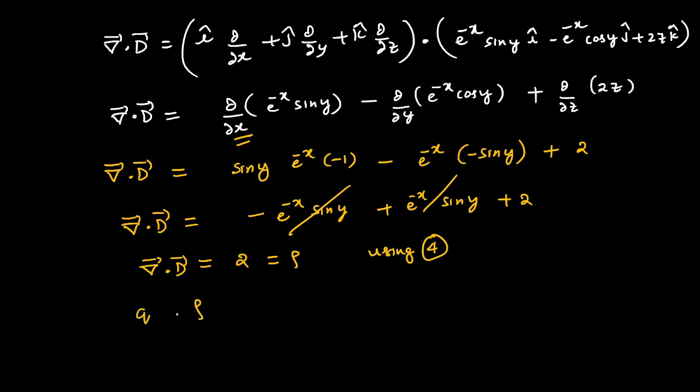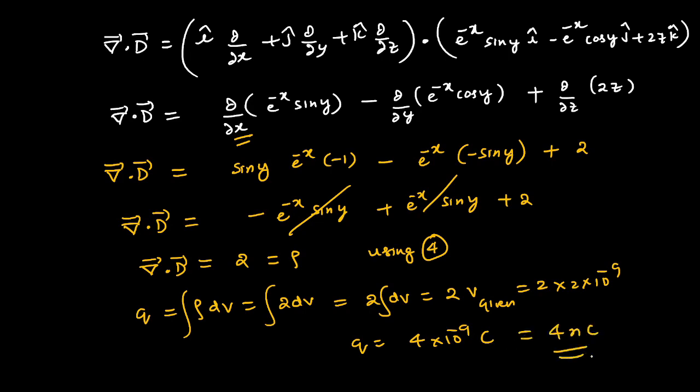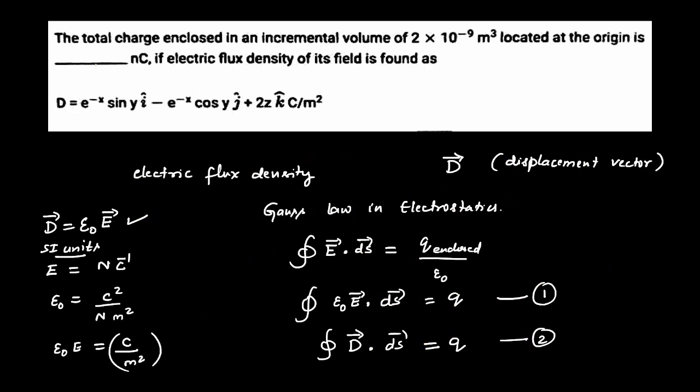We have charge given as rho times dV, which is integration of 2 times dV. 2 is constant, so integration of dV is the volume given. Given volume in this problem is 2×10^-9, so it turns out to be 4×10^-9 coulomb. In our question, we have to write the answer as 4 here in this space.